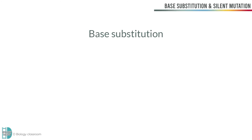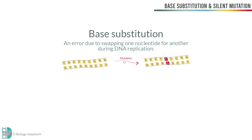Base substitution is an error due to swapping one nucleotide for another during DNA replication. As the primary structure of the polypeptide coded by the gene is altered, the protein produced may be non-functioning or completely different.